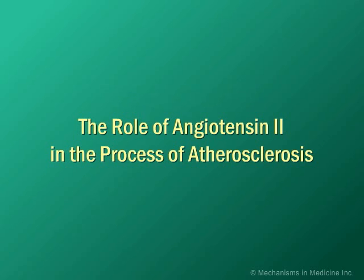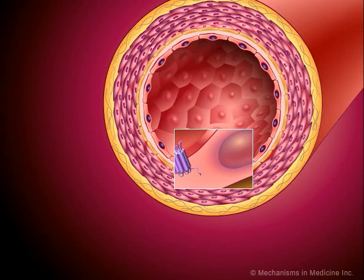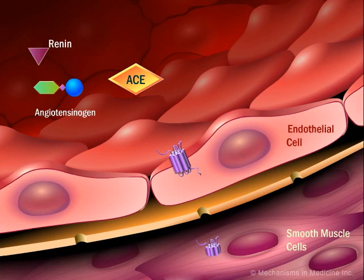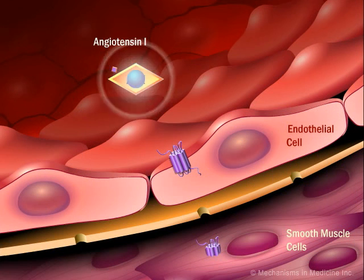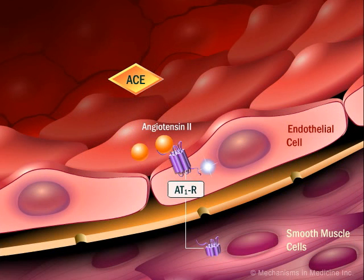The Role of Angiotensin II in the Process of Atherosclerosis. Angiotensin II is formed in the circulation and locally in many tissues such as the brain, kidney, heart, and blood vessels.